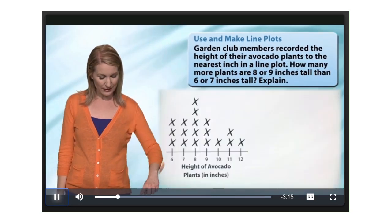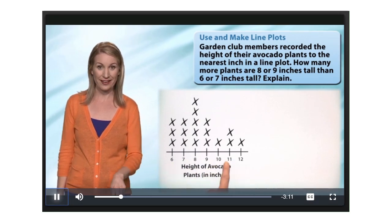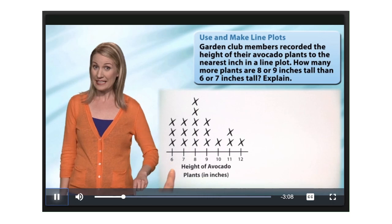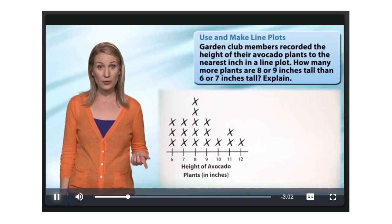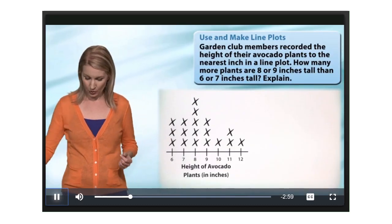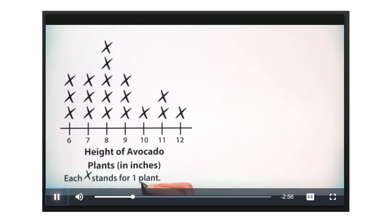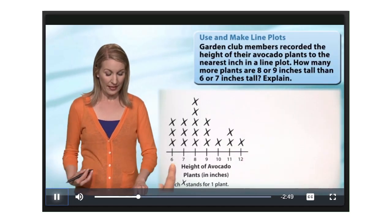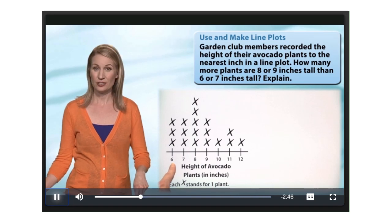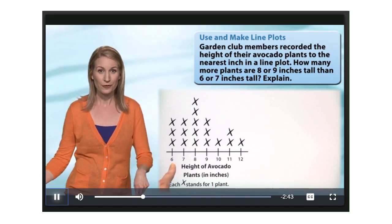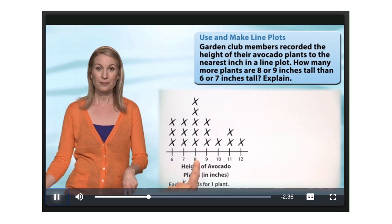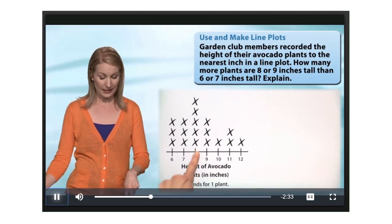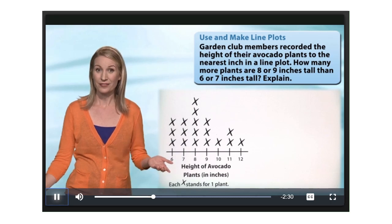You can see that the height of the avocado plant is represented horizontally, and this is in inches. Where it says 6, there are 3 X's. Each X represents 1 plant. So the number of plants that are 6 inches tall is 1, 2, 3. For example, the number of avocado plants that are 8 inches tall is 1, 2, 3, 4, 5.